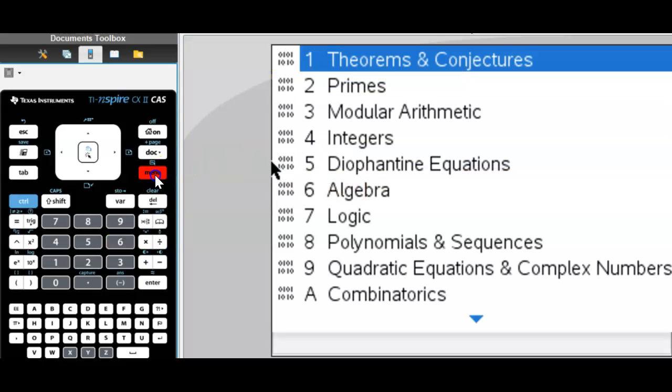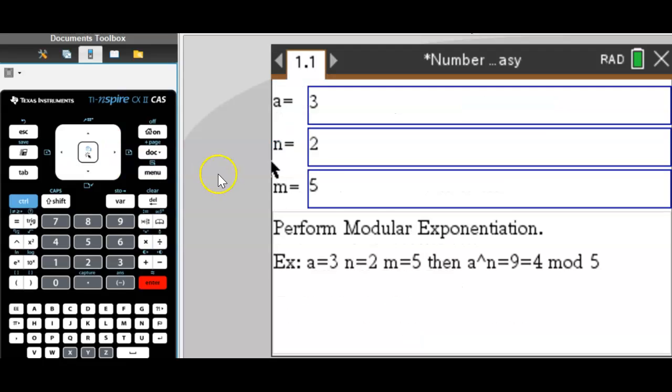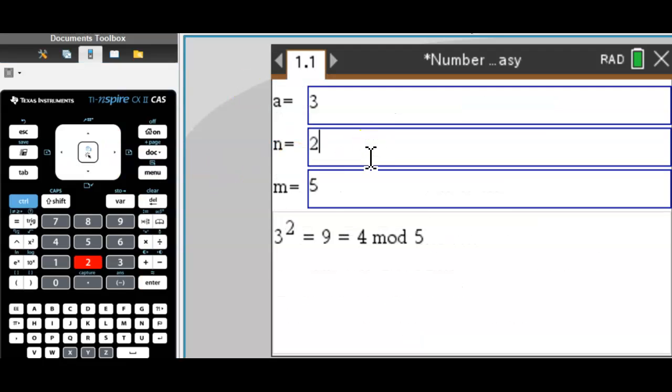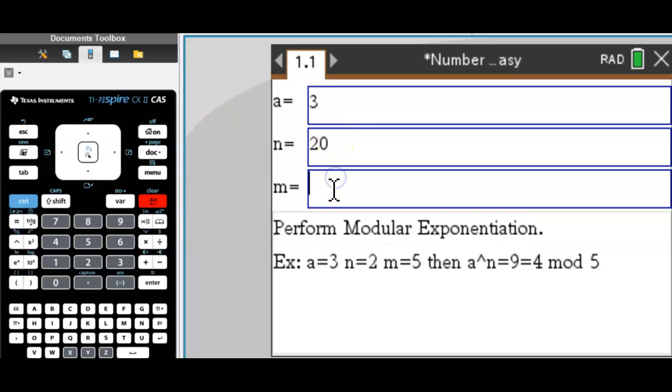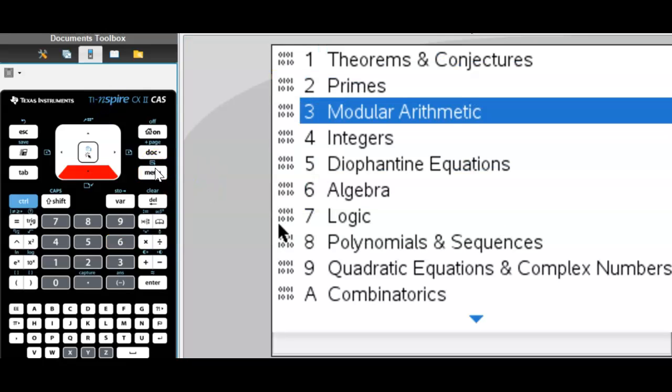So a very important tool to have under modular arithmetic. We also want to be able to take powers quickly. 3 squared is 9, which equals 4 mod 5, and we can do big exponents to get large powers like this one here. It's always correct. You never have to press enter. You get your answer right away and very helpful.